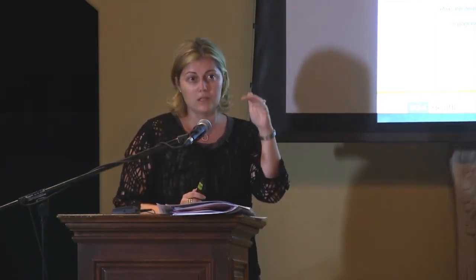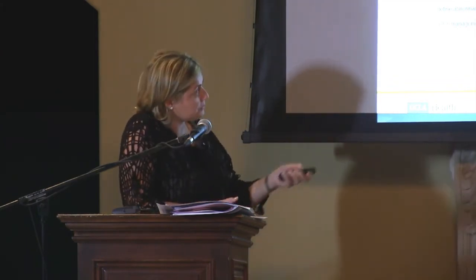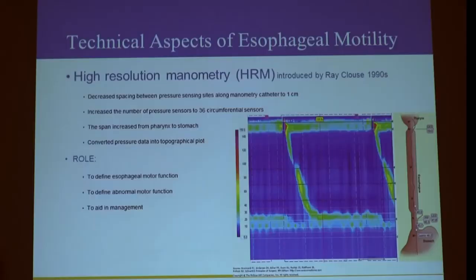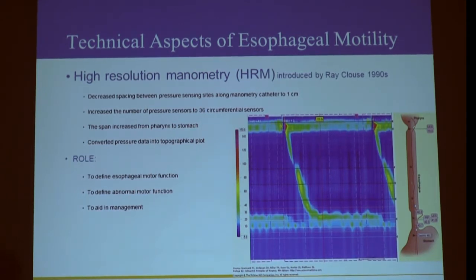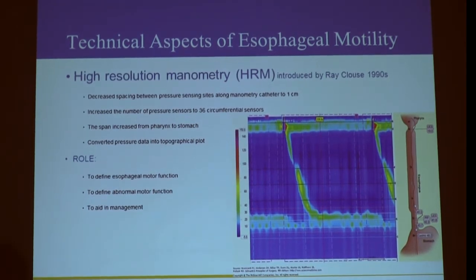Not only does it cover pharynx to stomach, but these pressure points are converted into a topographical color plot. Based on the colors — red being higher pressures, blue being lower — we have landmarks. This is the upper esophageal sphincter, which opens up when you're trying to swallow and then closes immediately once food is moving into the esophagus. This is your striated muscle, the transition zone between striated and smooth muscle. This is extremely beneficial for rheumatology patients or those with connective tissue disorders who have difficulty swallowing. Then, of course, this is the lower esophageal sphincter — and if we're looking for transient lower esophageal sphincter relaxations, one of the causes of GERD, this is a great study.